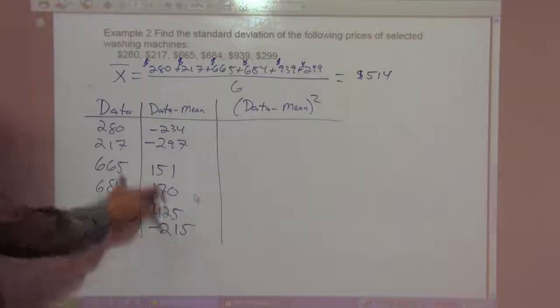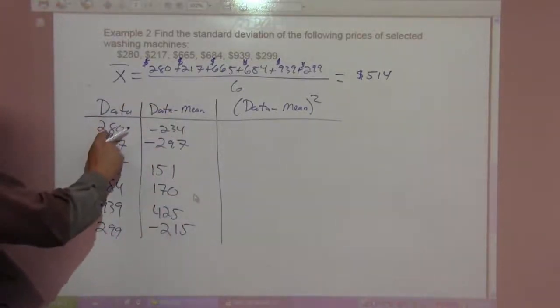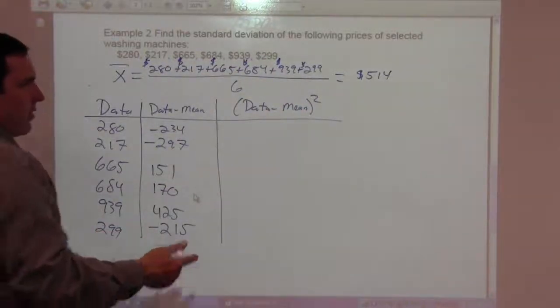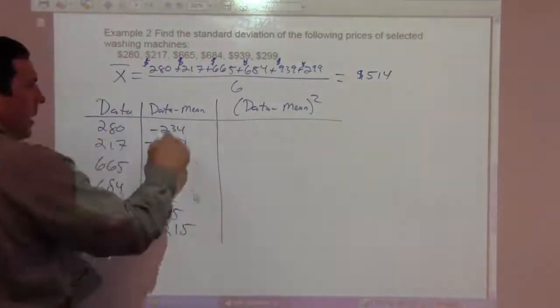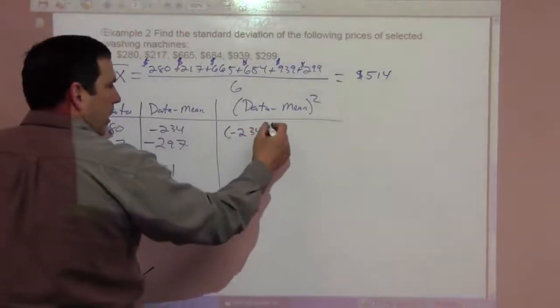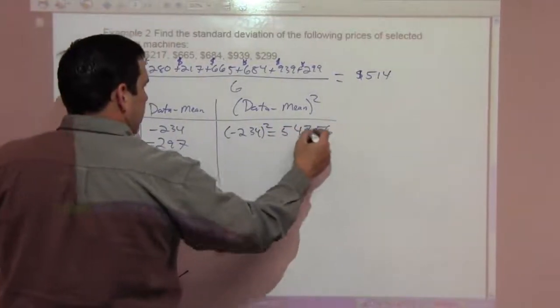So I have the data minus mean column. Now the negatives aren't really that big of a deal because we're going to square now. Negative 234 squared, I get 54,756. Negative 297 squared is 88,209.